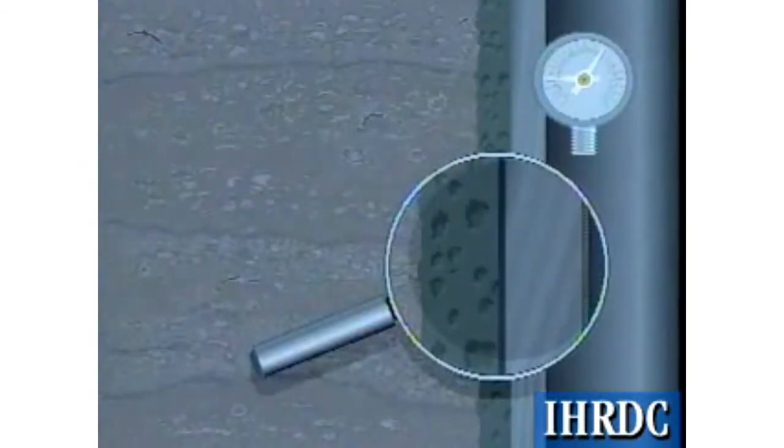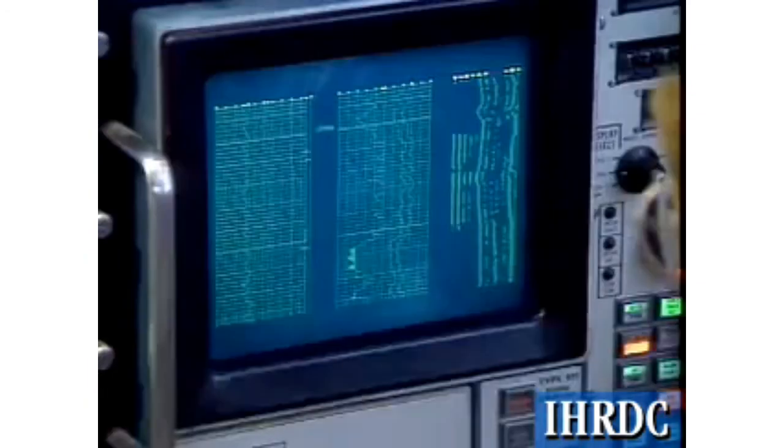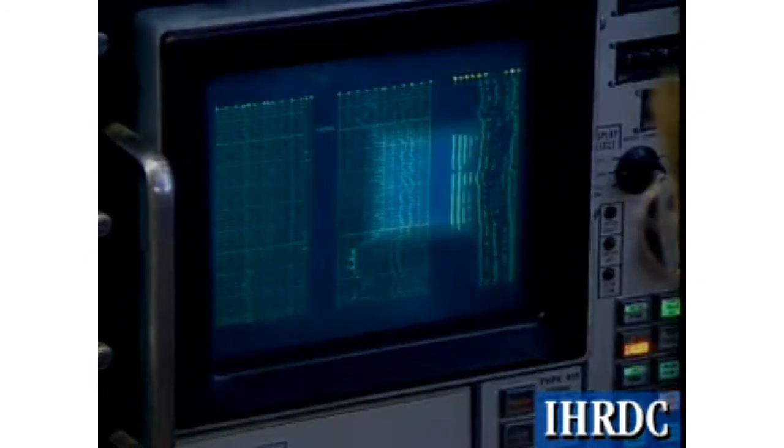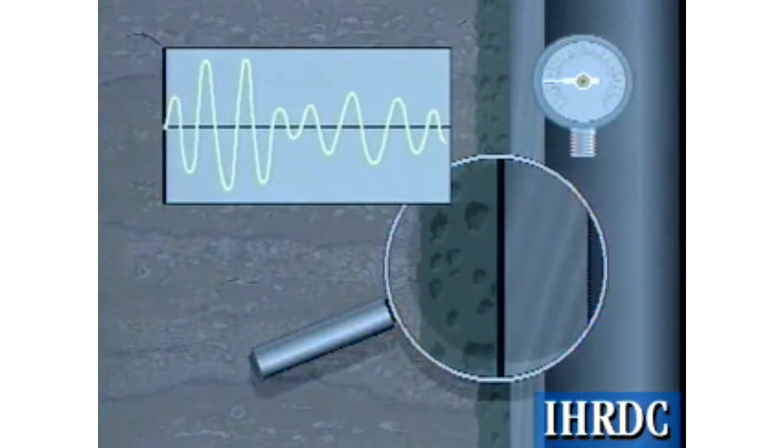A reduction in wellbore pressure from the time the cement hardens to the time of the CBL logging run can cause the pipe to shrink from the cement sheath, forming a microannulus around the casing. Even though this microannulus does not permit hydraulic communication, the cement cannot maintain the coupling to the pipe required to attenuate the acoustic signal. As a result, the recorded amplitude will indicate a poor bond.